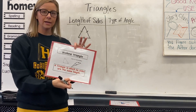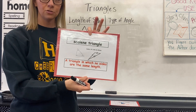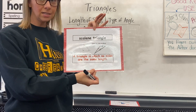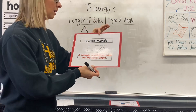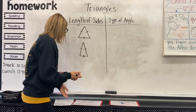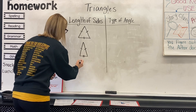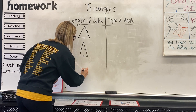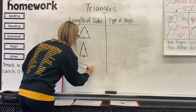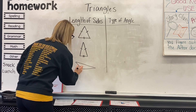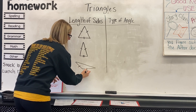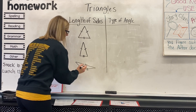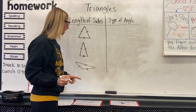The last one is called a scalene triangle. This type of triangle doesn't have any sides that are the same length, so it might look something like this. You would use one tick mark, two tick marks, and then three tick marks to show that they're all different lengths.